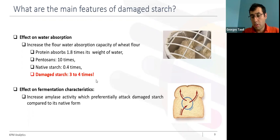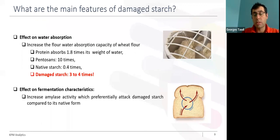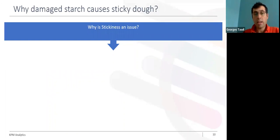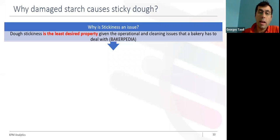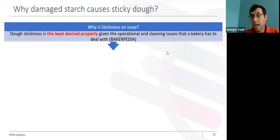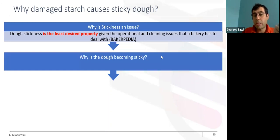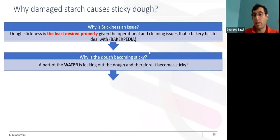We just saw that there are many technological challenges in the baking industry, and the common reason for all these problems is damaged starch. Let me explain why damaged starch causes sticky dough. According to Bakerpedia, dough stickiness is considered the least desired property, given the operational and cleaning issues the bakery must deal with. The dough becomes sticky because part of the water from the dough will leak out, and as a consequence, the dough becomes sticky.